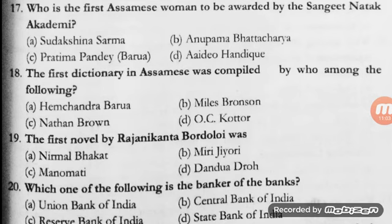Question number 18: the first dictionary in Assamese was compiled by whom? Options: Hemchandra Barua, Miles Bronson, Nathan Brown, O.C. Cotter. The correct answer is B — Dr. Miles Bronson. In case you don't know the year, please note it down: it's 1867.